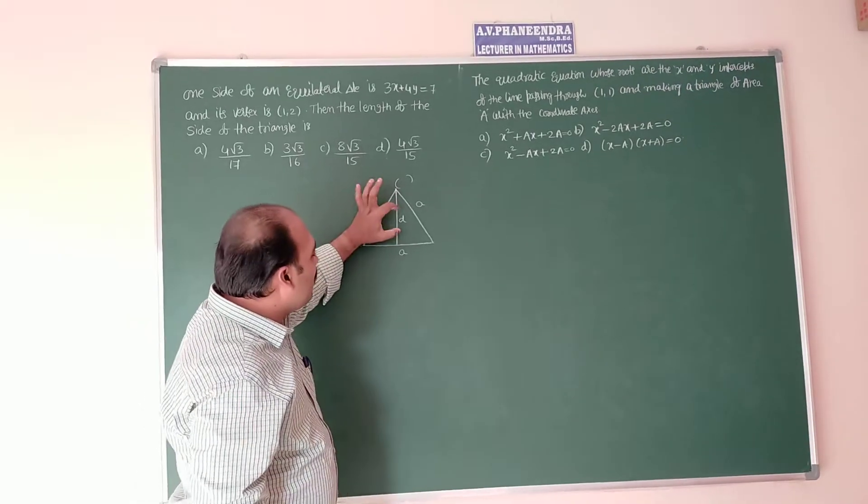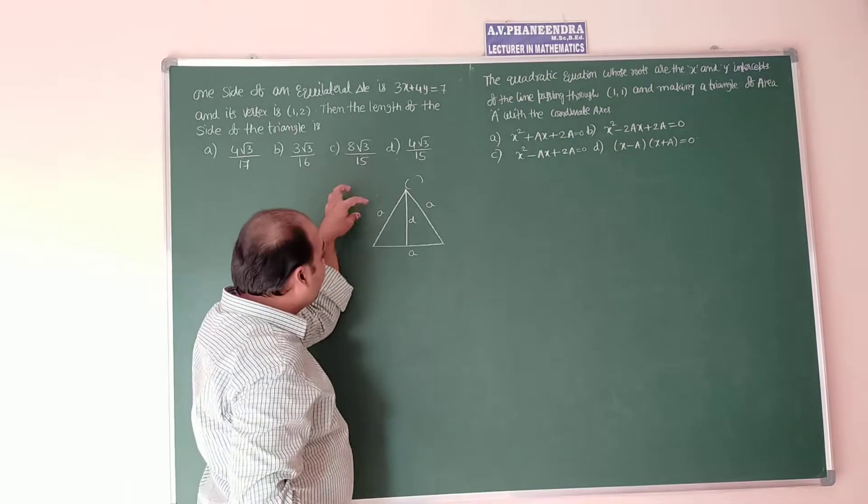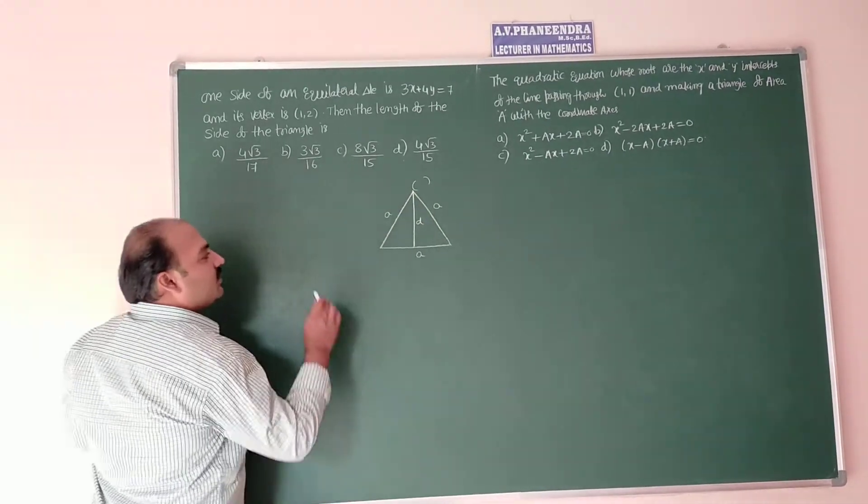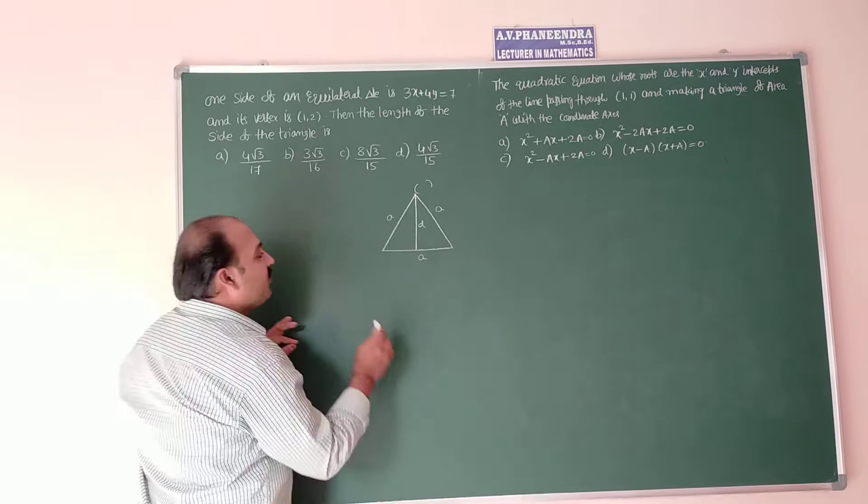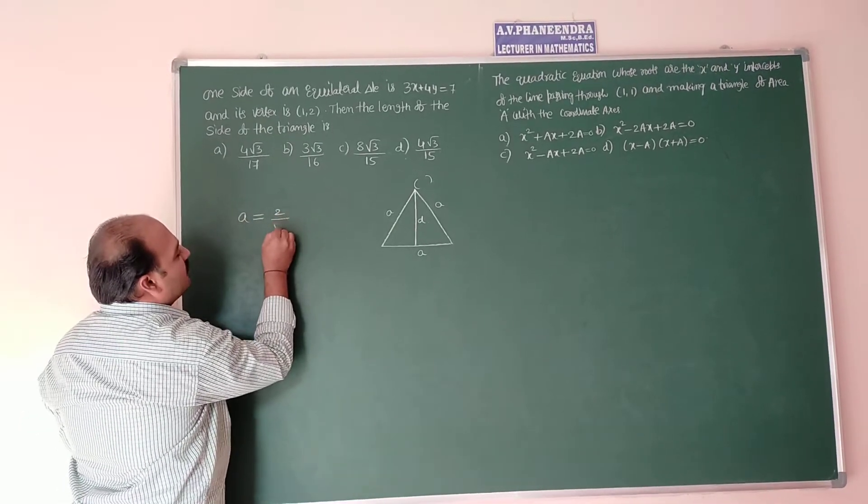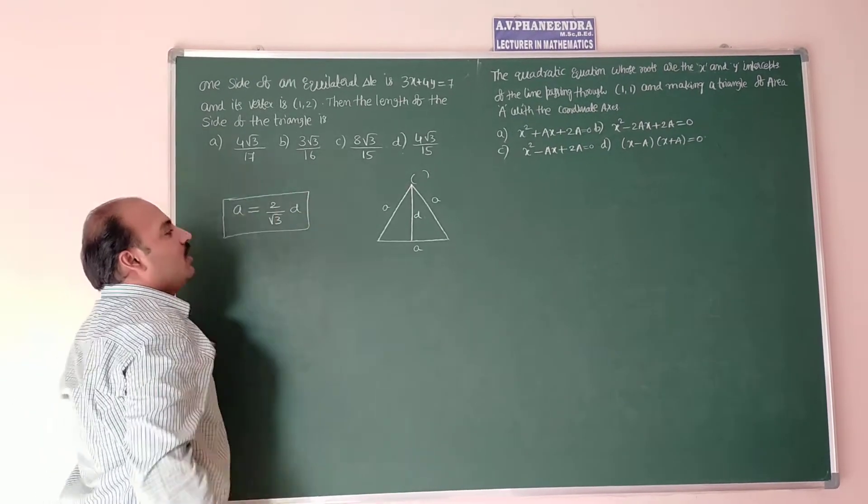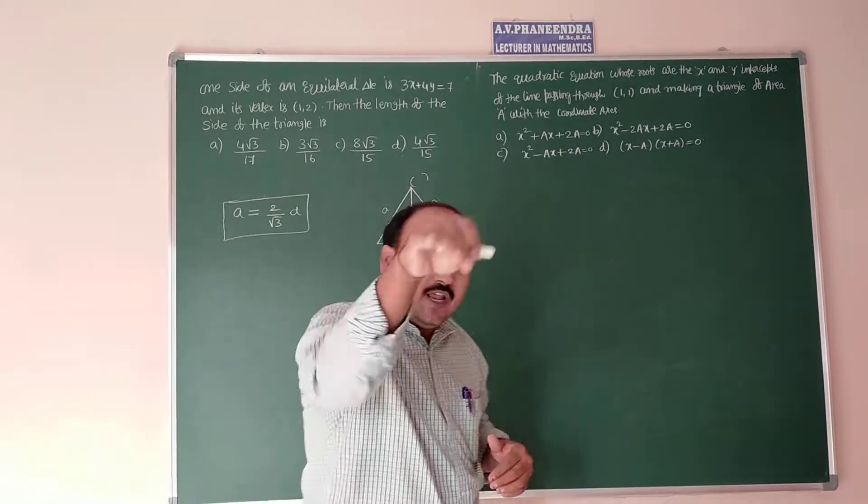Whenever you know D value, how to calculate the length of equilateral triangle side, the formula we have is A equal to 2 by root 3 into D. 2 by root 3 into D.